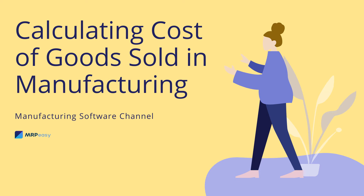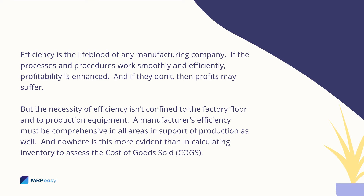Calculating Cost of Goods Sold in Manufacturing. Efficiency is the lifeblood of any manufacturing company. If the processes and procedures work smoothly and efficiently, profitability is enhanced, and if they don't, then profits may suffer. But the necessity of efficiency isn't confined to the factory floor and to production equipment. A manufacturer's efficiency must be comprehensive in all areas in supportive production as well, and nowhere is this more evident than in calculating inventory to assess the Cost of Goods Sold, COGS.